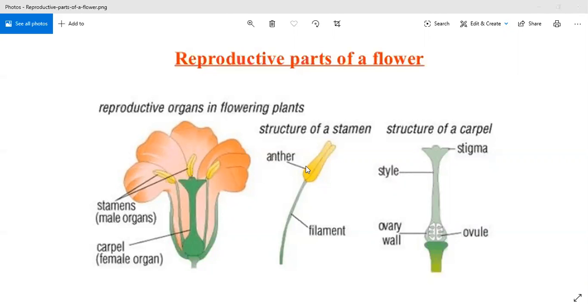A bilobed terminal structure is called anther, and a long cylindrical stalk-like structure is called filament.